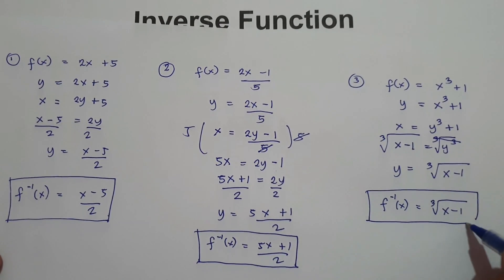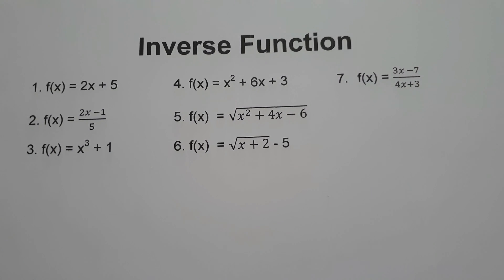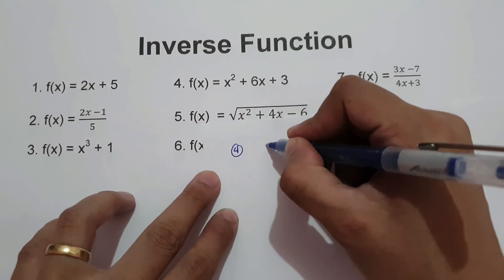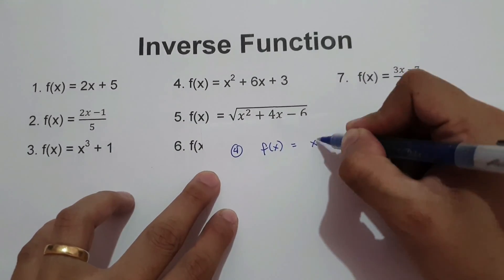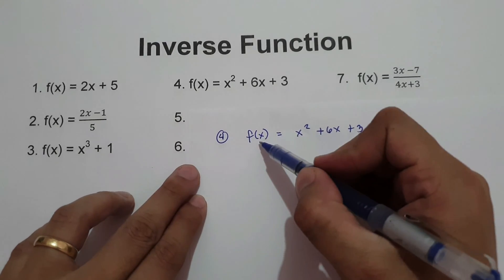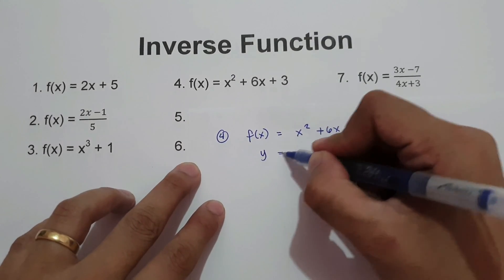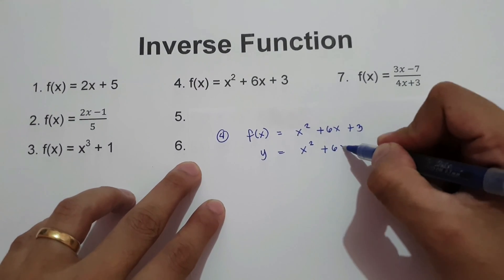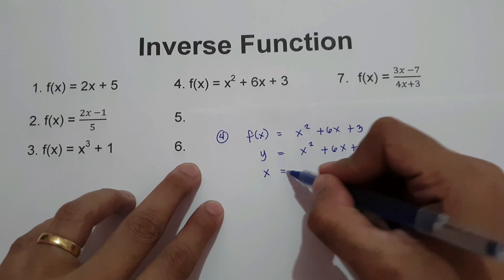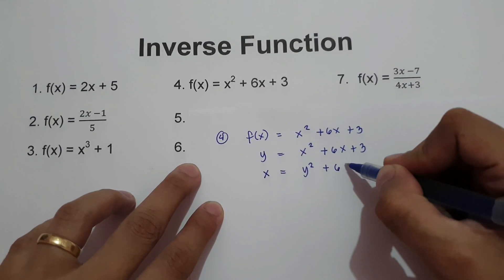So our answer is the inverse of the function is the cube root of x minus 1. This will be our final answer. On number 4, f of x equals x squared plus 6x plus 3. How do we find the inverse of this function? We need to change f of x in terms of y: y equals x squared plus 6x plus 3. Then switch x and y variable: x equals y squared plus 6y plus 3.